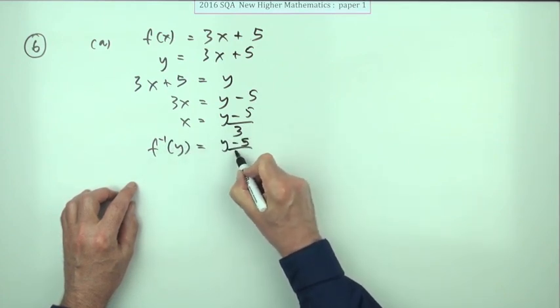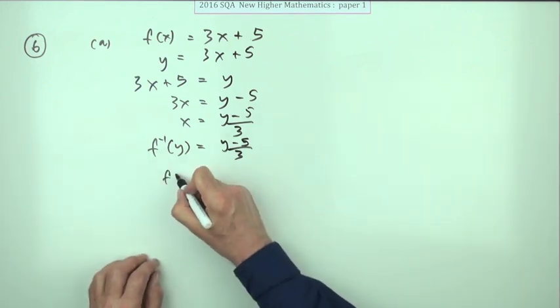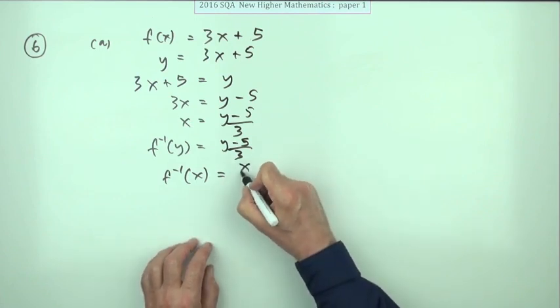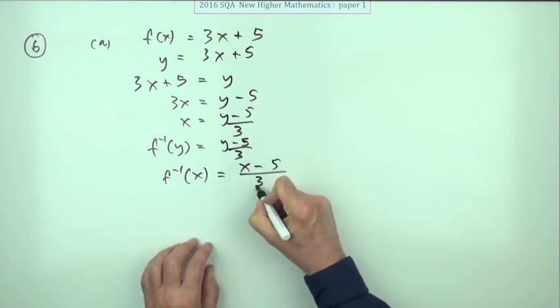So you put in the answer and you get this, but a letter is just a letter so you can use any letter you like. So we'll just say the inverse function of x is (x - 5)/3.